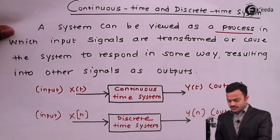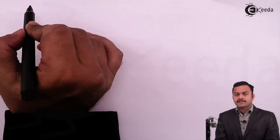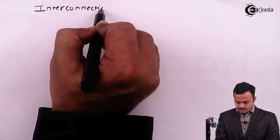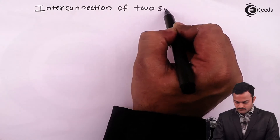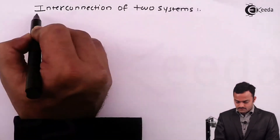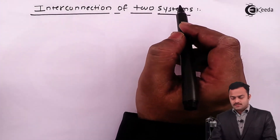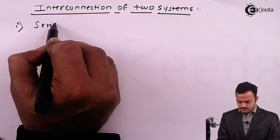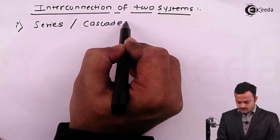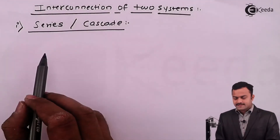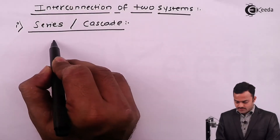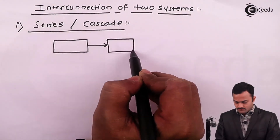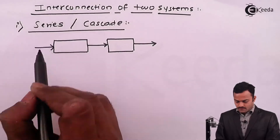There are different connections of two systems, and in this part we are seeing the interconnection of two systems. The first interconnection type is series, also called cascade. In a cascade connection we have two systems connected in sequence, with x(t) as the input and the signal flowing through both systems.